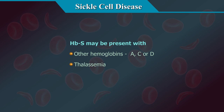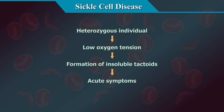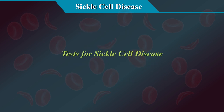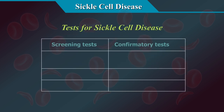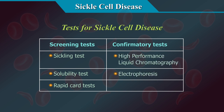Under conditions of low oxygen tension, heterozygous individuals can develop acute symptoms due to the formation of insoluble tactoids. Tests for sickle cell disease include: screening tests — the sickling test, solubility test, and rapid card tests; and confirmatory tests — HPLC, electrophoresis, and molecular markers.